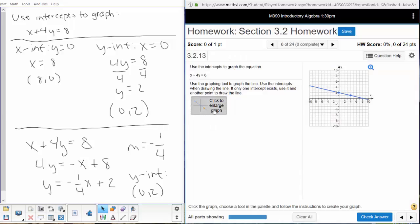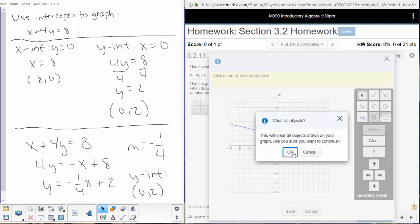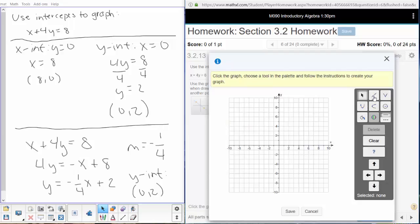I'll go ahead and click OK and start again. I'll clear that graph out, and again, grab that line tool. First point doesn't matter in this case because I'm going to be plotting it at (0, 2) and (8, 0).